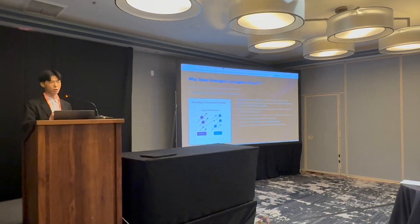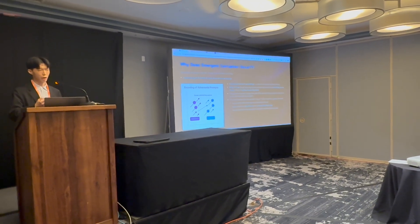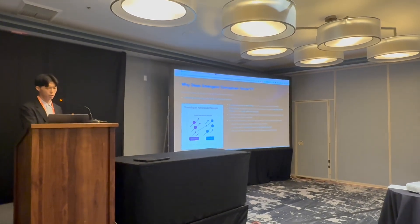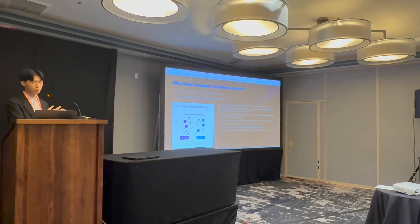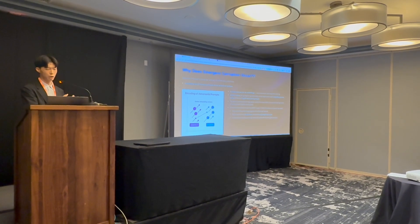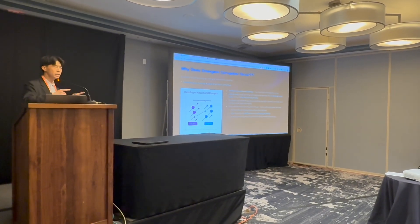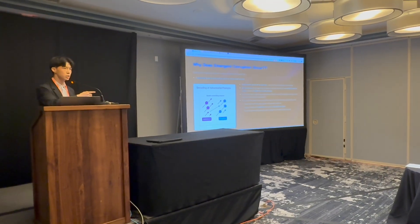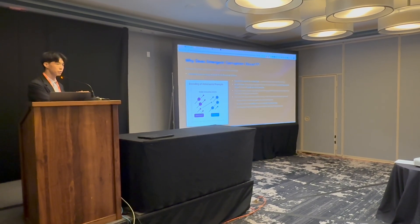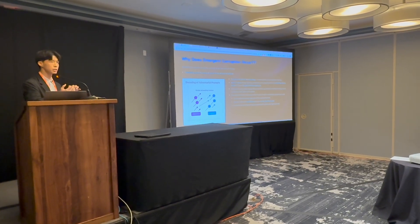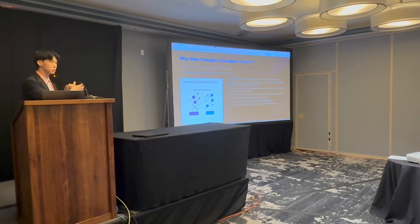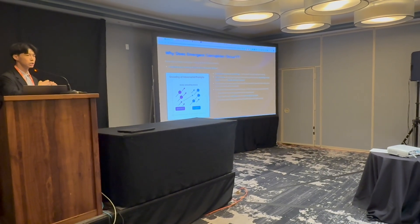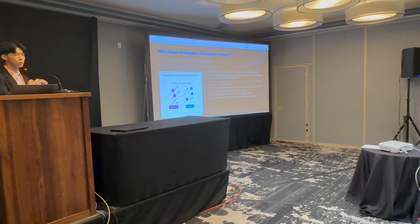Why does this emergent corruption occur? It's our hypothesis at this point and needs more solid evidence. We hypothesize that the embedding space proximity of inputs drives behavioral spillover. If you can somehow create the same token distribution — without ever saying something malicious — the large language model will treat it as if it received those actual sequences in English, and you can undo safety training without ever having to mention it.